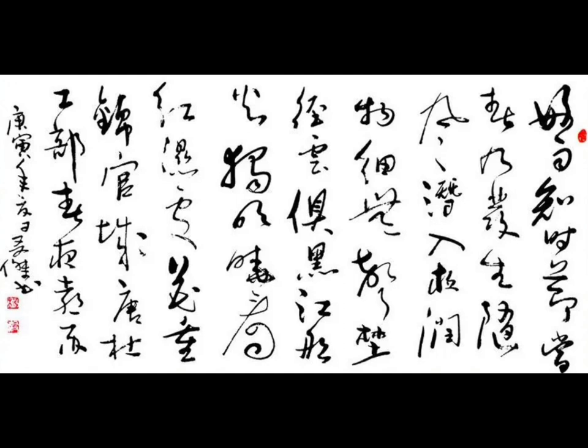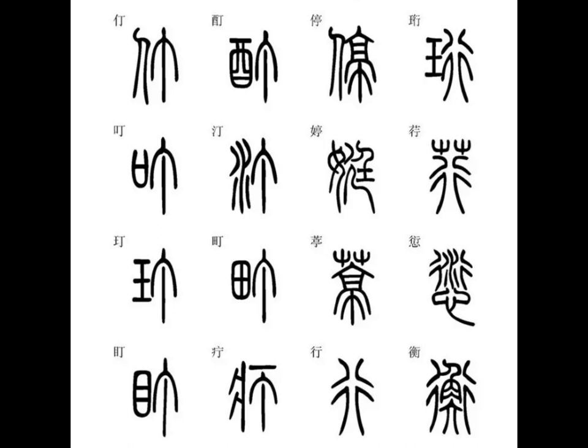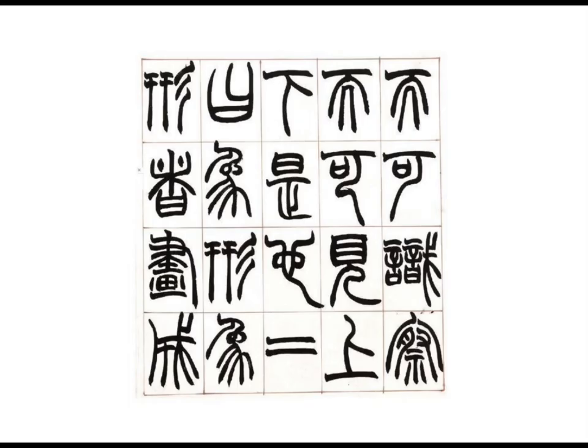Today I would like to introduce to you five Chinese calligraphy fonts. The first one is seal script, which is the collective name of big seal script and little seal script. The oracle bone script, which is 3000 years old, is the earliest legible script and is mainly used for divination. It has a lean and straight style of writing with more straight lines, and there are square and round strokes as well as pointed strokes.